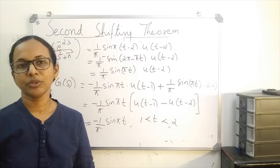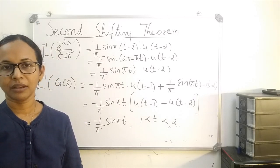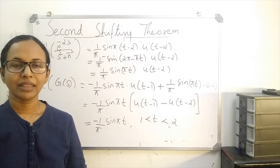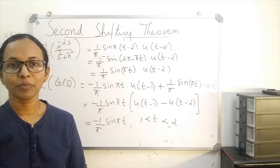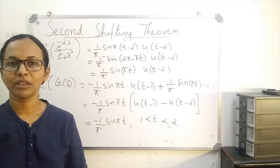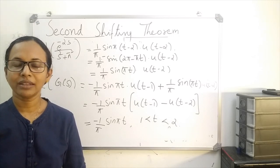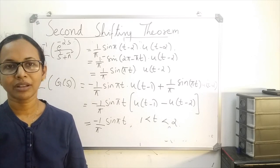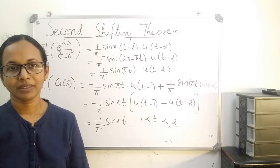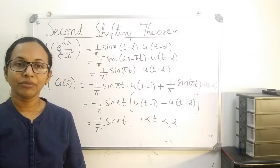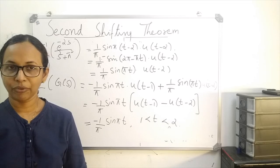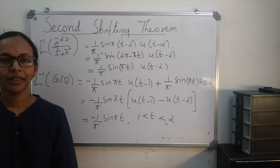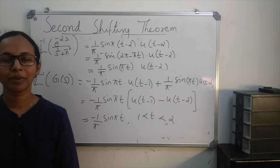So we can use the second shifting theorem to find the inverse Laplace of functions of the form e raised to minus as times f of s. First, identify f of s and find its inverse as f of t. Then the answer is f of t minus a times u of t minus a.